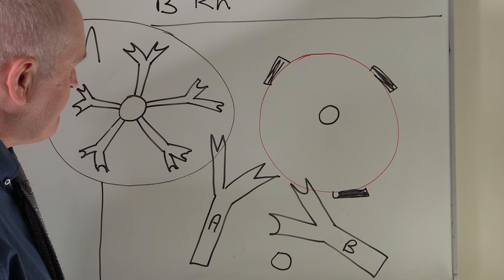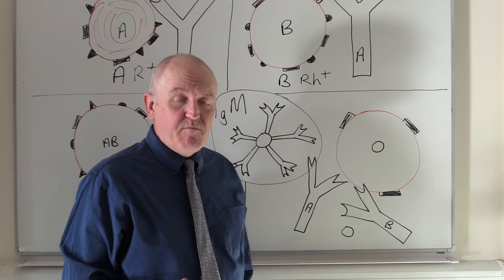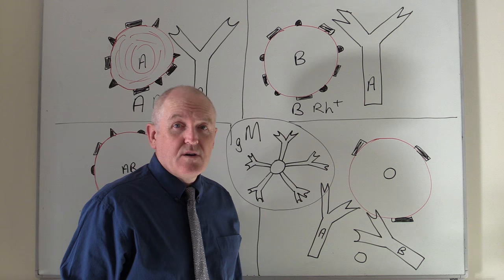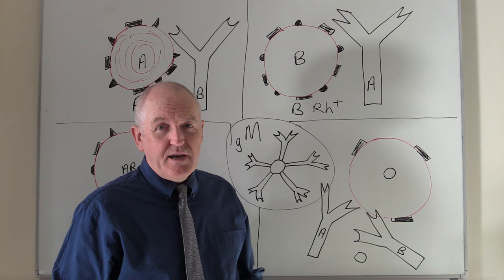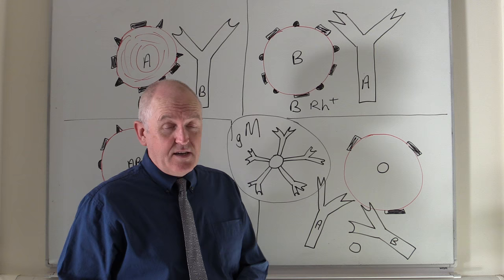The rhesus factor is mostly the D factor, and it is simply present or absent. That means in addition to being A, B, AB, or O, someone can be any of those groups with or without the rhesus factor. So blood groups can be A positive or A negative, B positive or B negative, AB positive or AB negative, and O positive or O negative. That describes the blood groups simply using the ABO rhesus system.